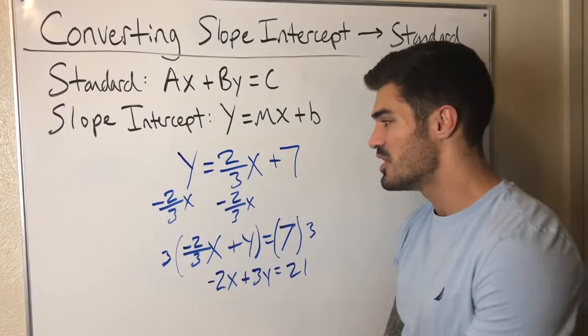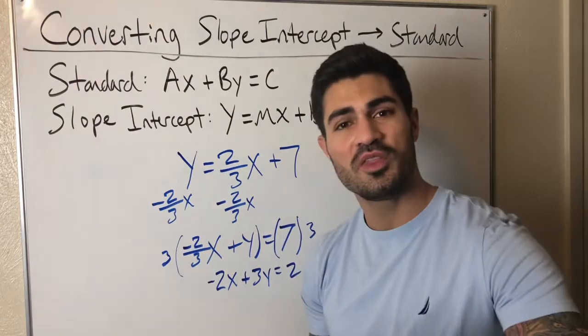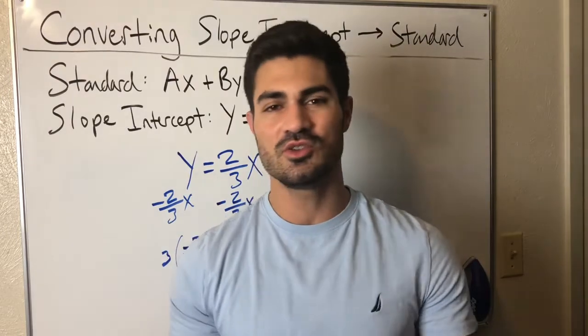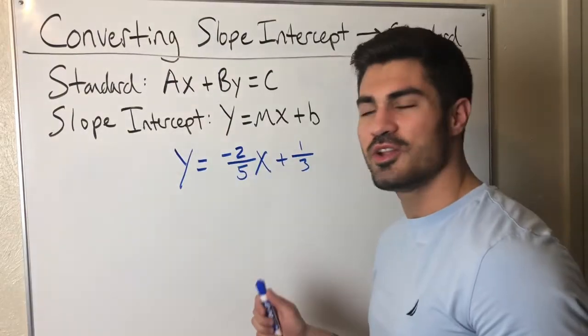So what are the steps? If we can break down the steps, first move that x term over with the y and then multiply by the least common denominator to clear the fractions. That's it. Really just two steps. All right, let's do another example.